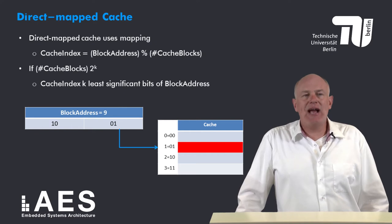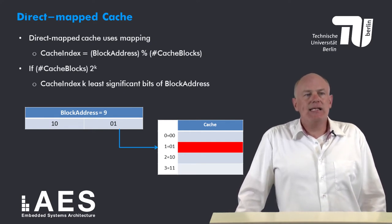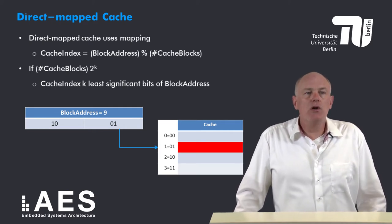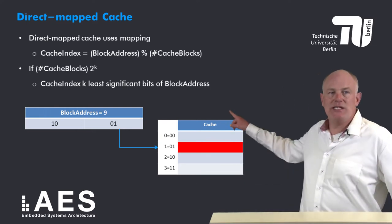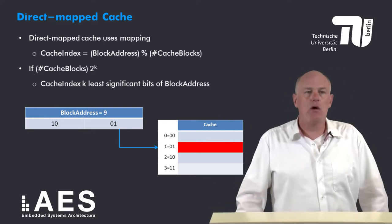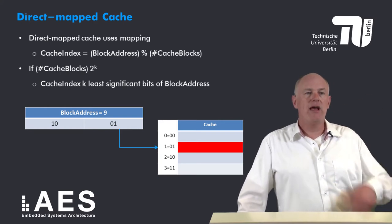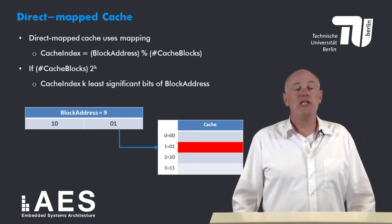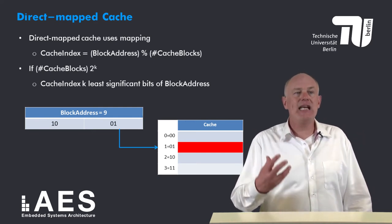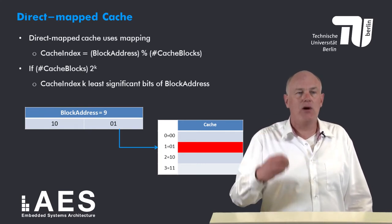A direct map cache uses the mapping: cache index equals block address modulo the number of cache blocks, where % is the modulo operator in C. That means if the number of cache blocks is a power of 2 — 2 to the power of k — the cache index k is given by the least significant bits of the block address.